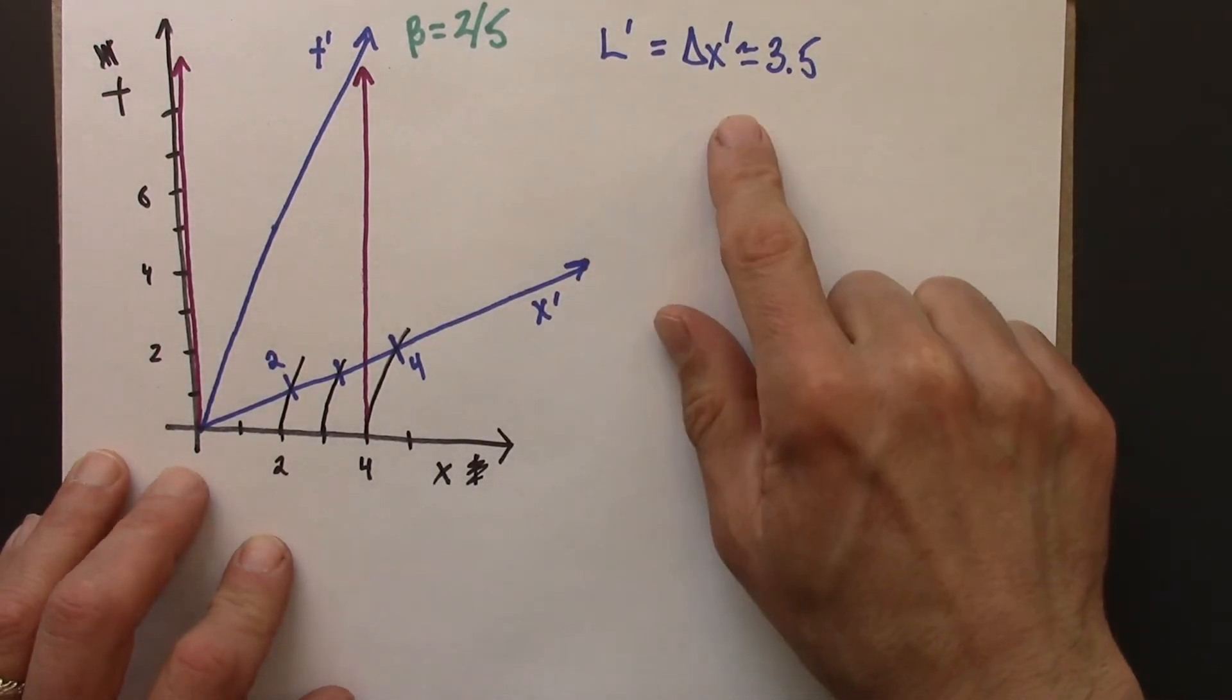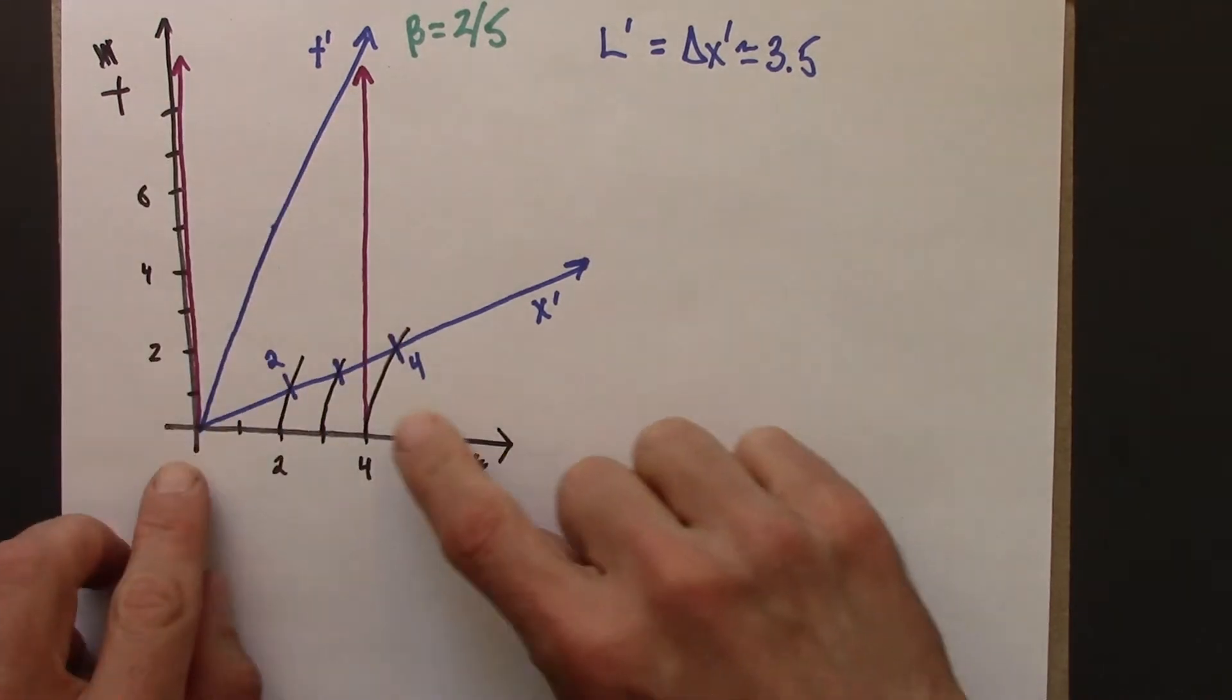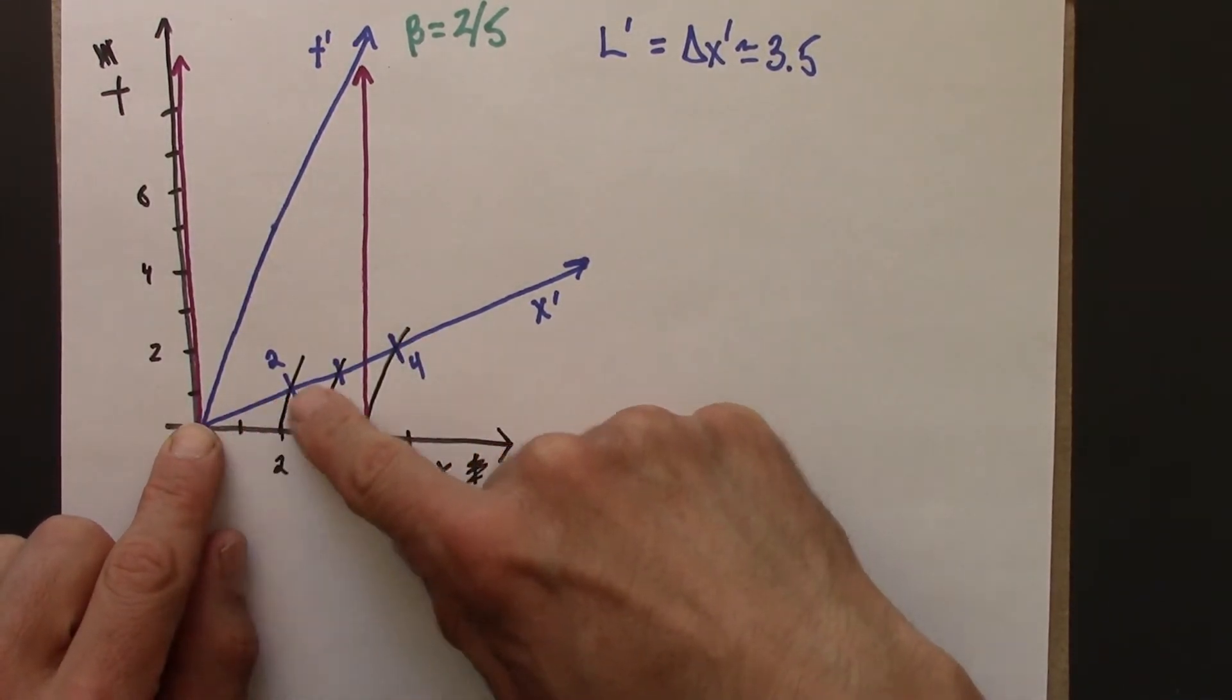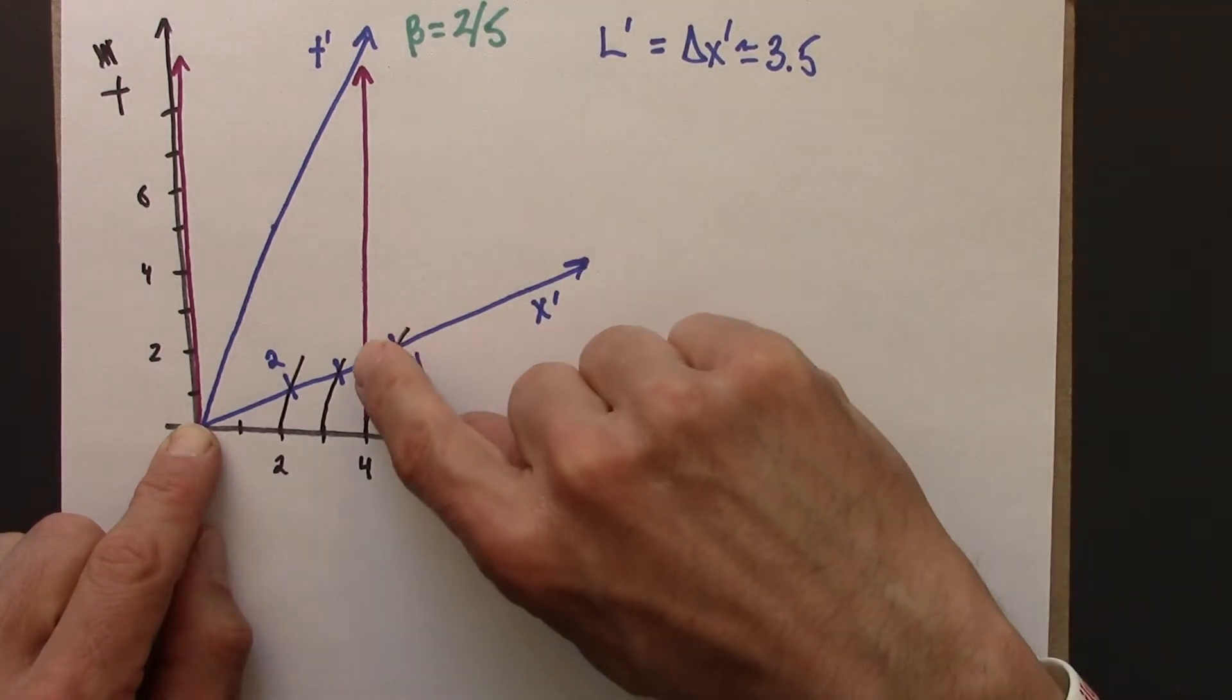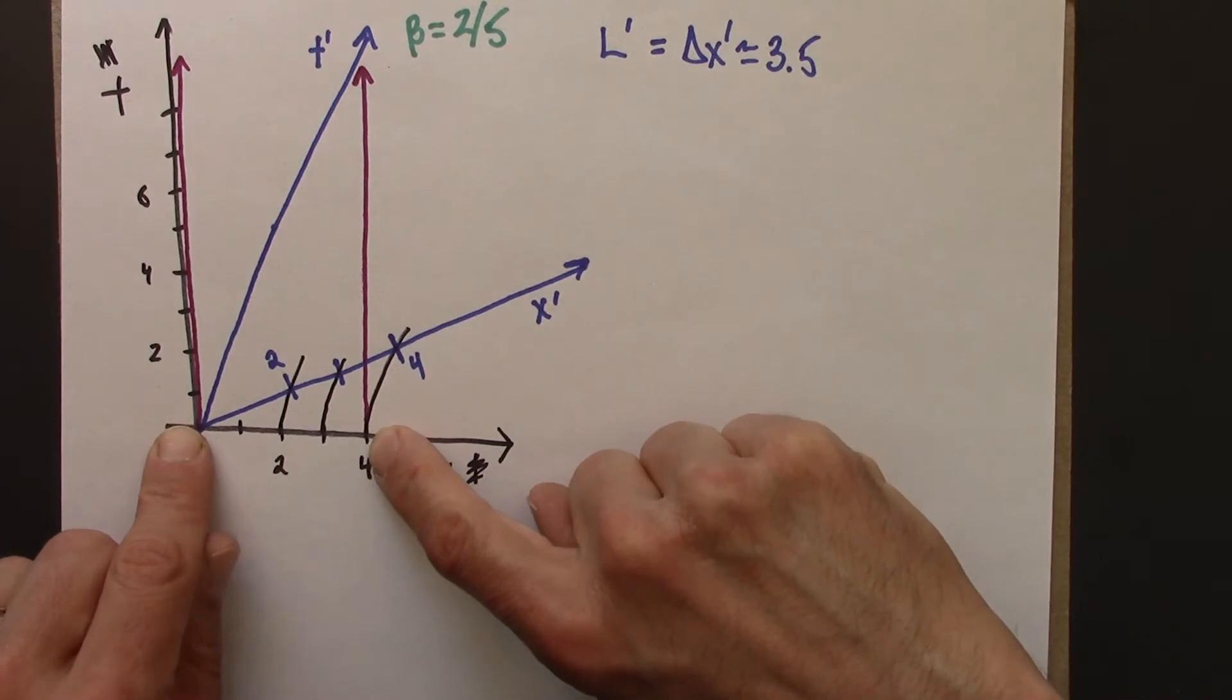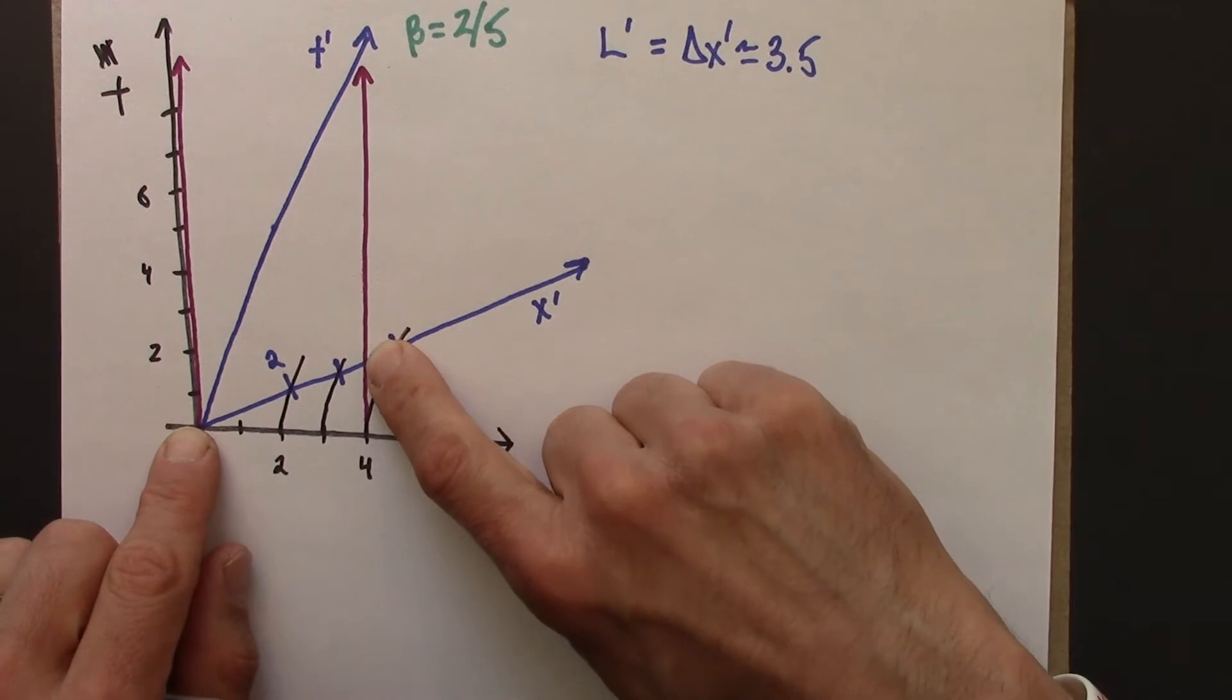So this gives us a qualitative picture of what's going on. We can see the rod, its length, and we can see for sure that the length in Beowulf's frame in the moving frame is going to be less, less than 4, than it is in the at rest frame. Let's do a little bit of algebra to see exactly how much less.